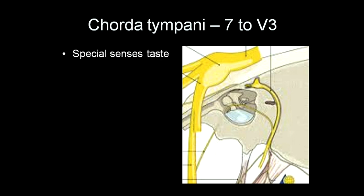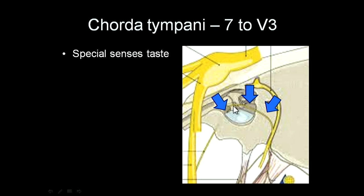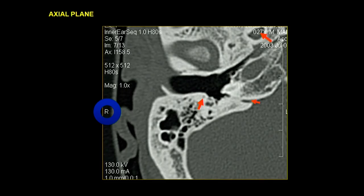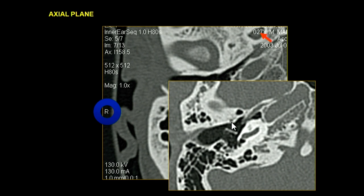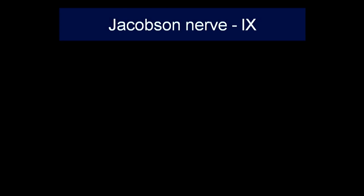The chorda tympani connects the seventh nerve to the mandibular nerve and carries special sensory taste fibers. It arises from the mastoid segment, passes through the tympanic membrane, travels through the middle ear along the neck of the malleus, then exits anteriorly through the petrotympanic fissure to join the mandibular division of the trigeminal nerve via the lingual nerve. On an axial plane, you can see a small dot at the posterior margin of the tympanic membrane — that is the chorda tympani canal.